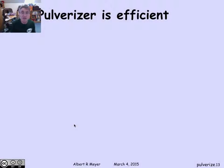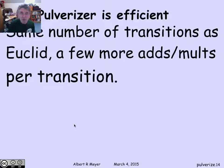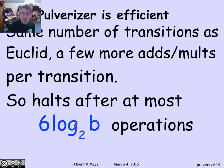The pulverizer is really another very efficient algorithm, exactly the way the Euclidean algorithm is efficient. It's basically got the same number of transitions. It's taking log to the base 2 b transitions, so it's exponentially efficient. There's a few more additions and multiplications per transition for the extended GCD than the ordinary Euclidean algorithm. The number of total arithmetic operations is proportional to log base 2 of b. The pulverizer is a very efficient algorithm, as well as the Euclidean algorithm.